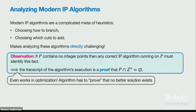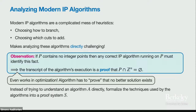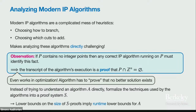This even works in the optimization case: if the algorithm outputs that some point X is optimal, it includes a proof that there's no better solution. This leads to proof complexity: instead of analyzing the algorithm directly, we formalize the techniques into a proof system and analyze that. Lower bounds on proof size imply runtime lower bounds on the algorithm.